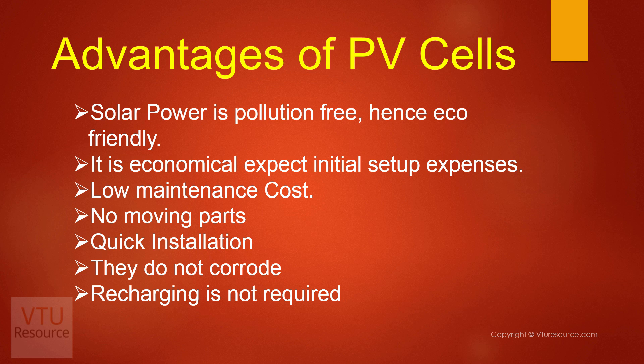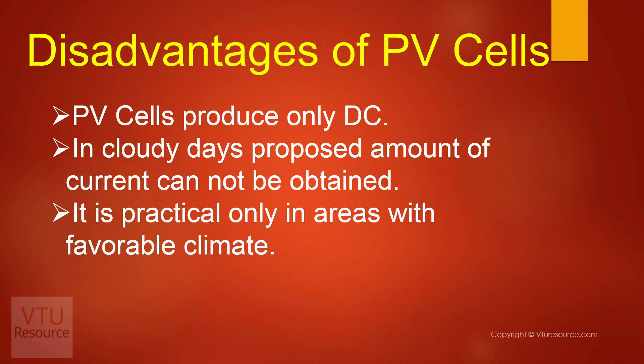Now let us see some of the disadvantages of PV cells. The main disadvantage is that PV cells produce only DC, which must be converted to AC before it can be used.